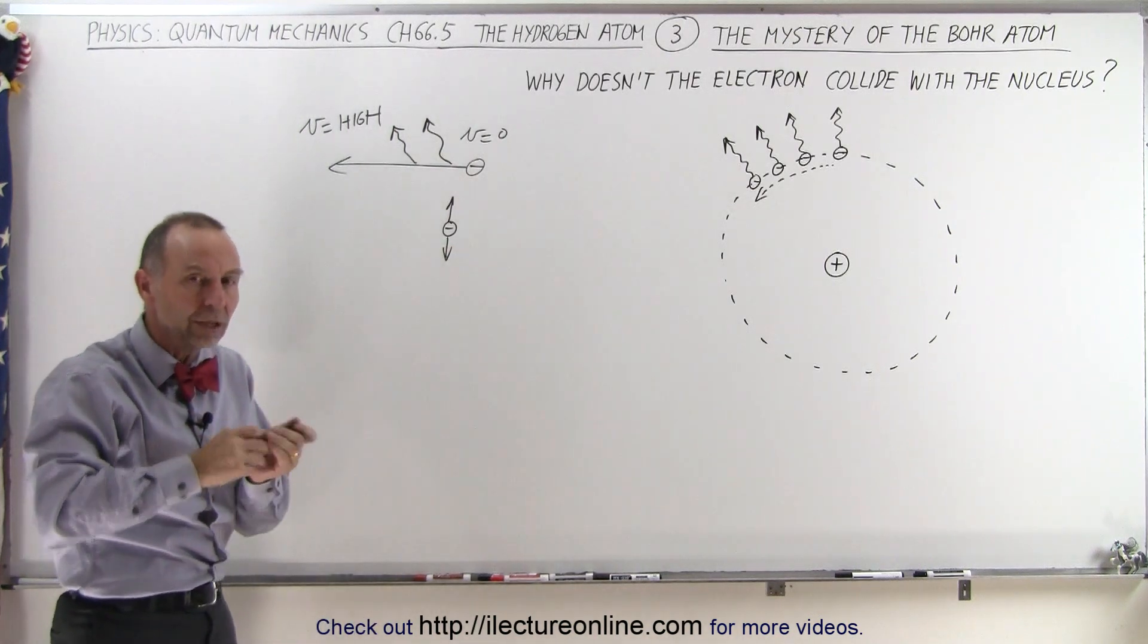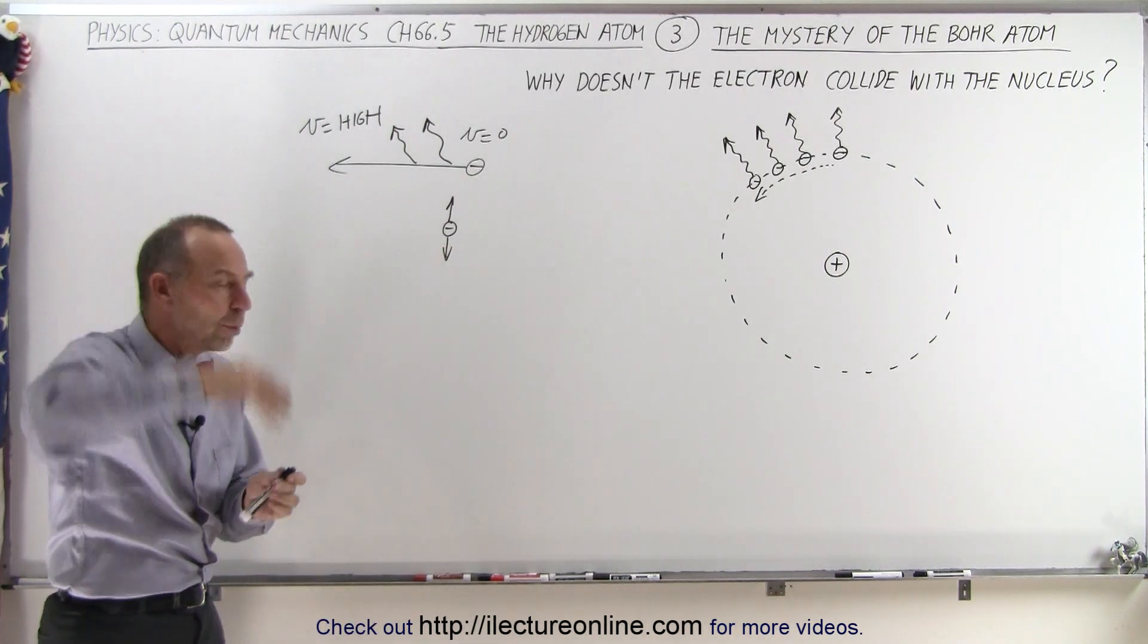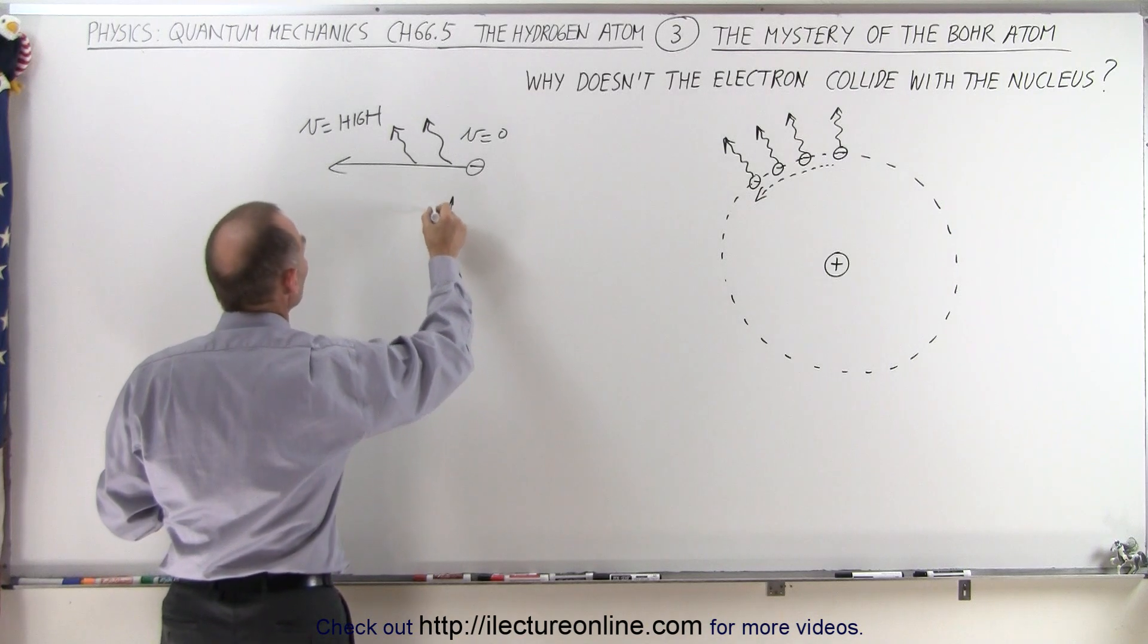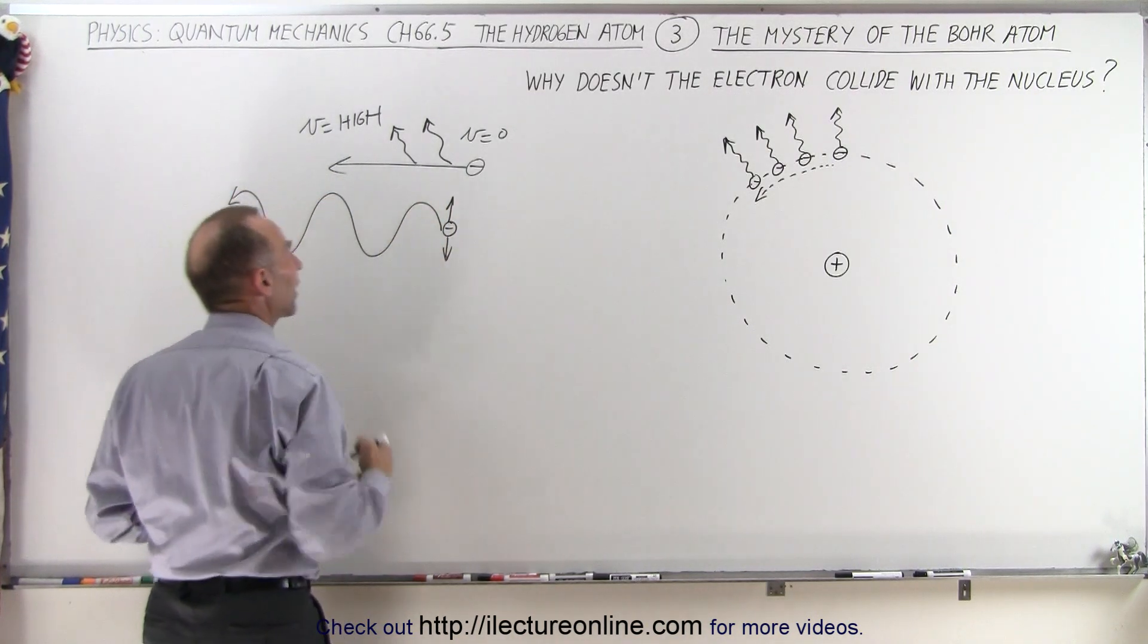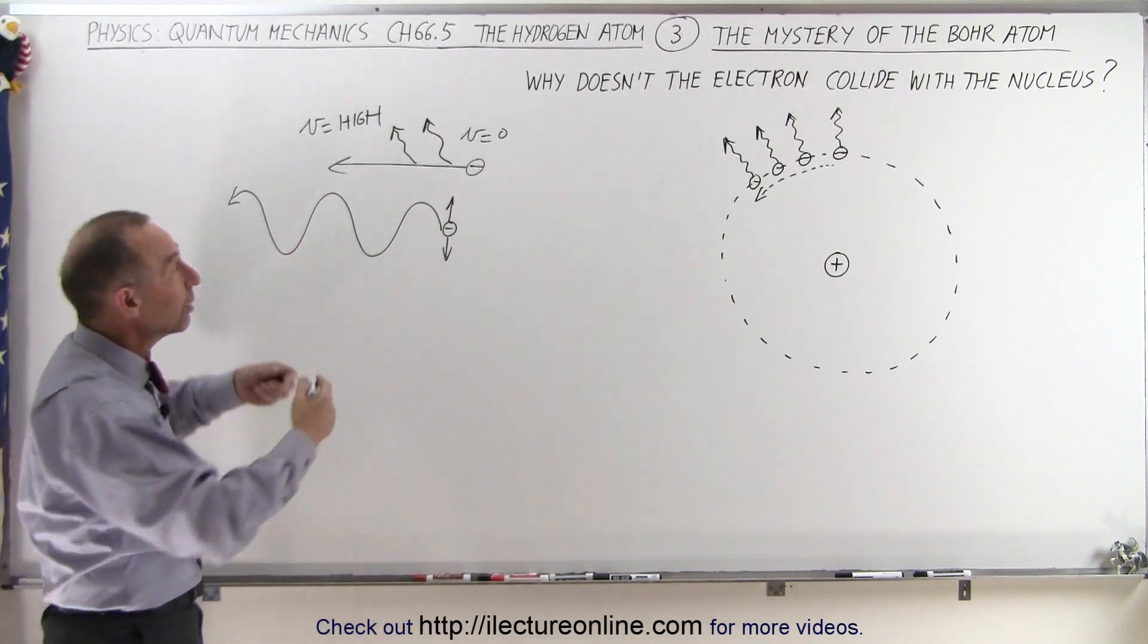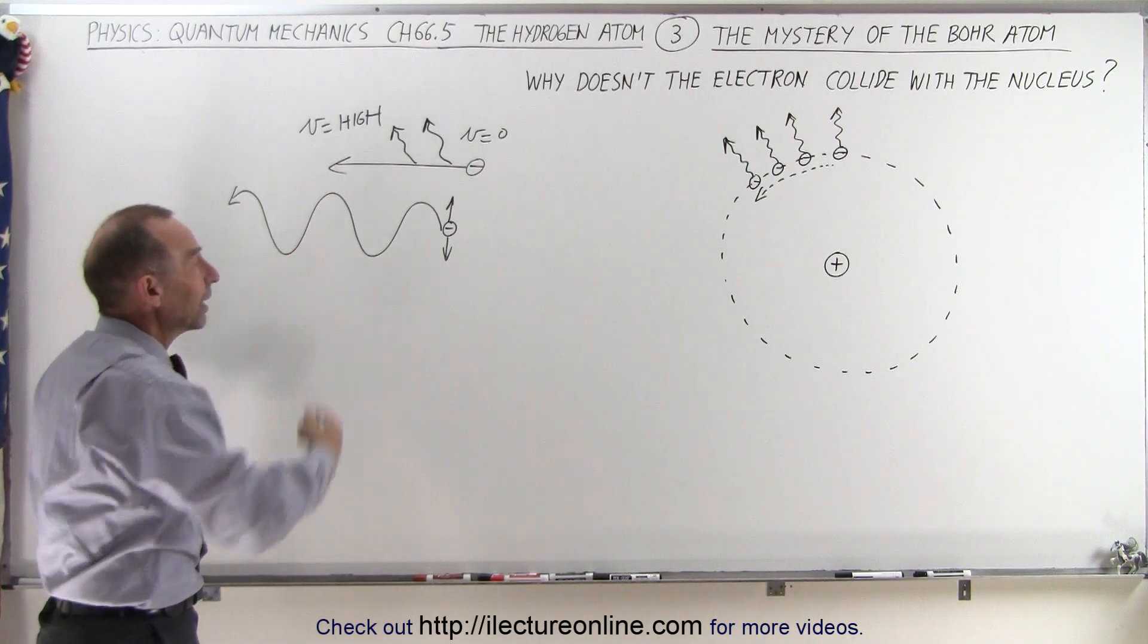When you have a charged particle that exhibits oscillatory motion, it would also cause an electromagnetic radiation or electromagnetic wave to emanate from that object. So both of these are examples of accelerating charges.